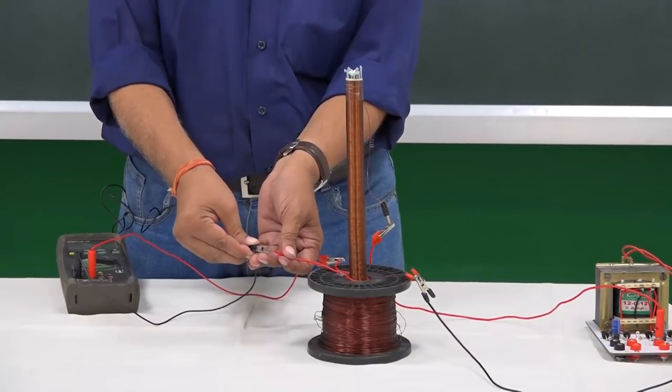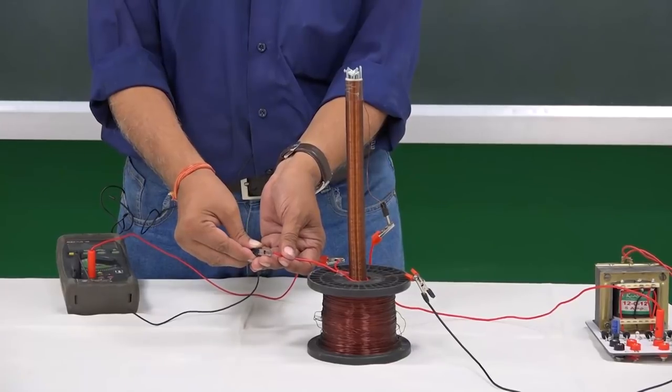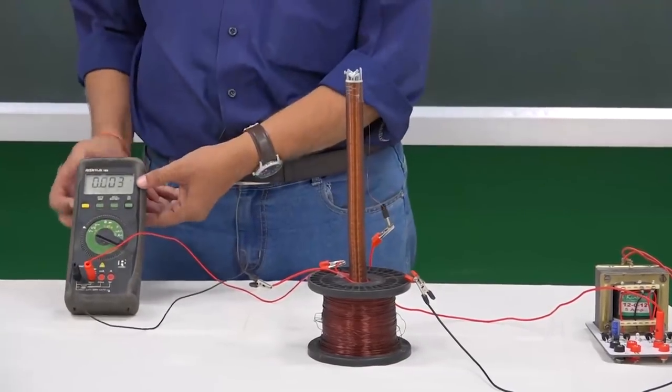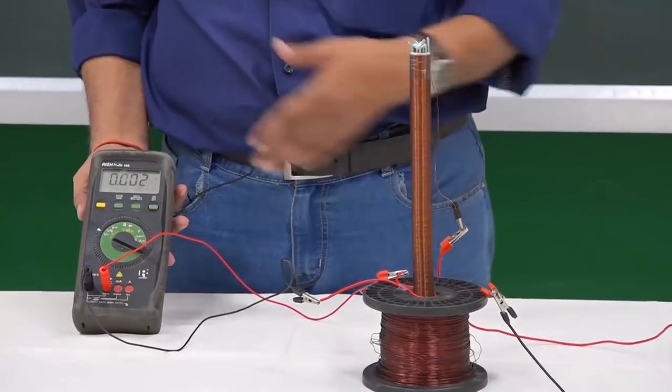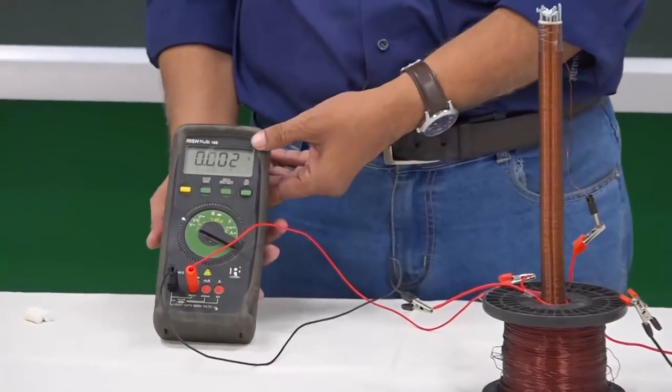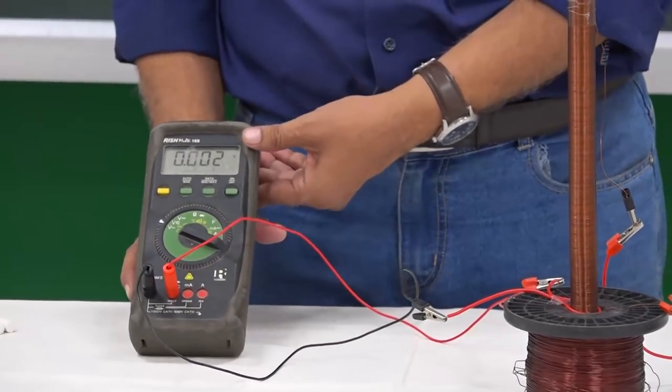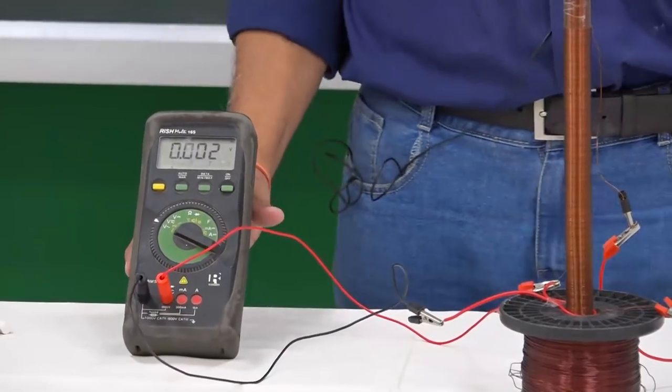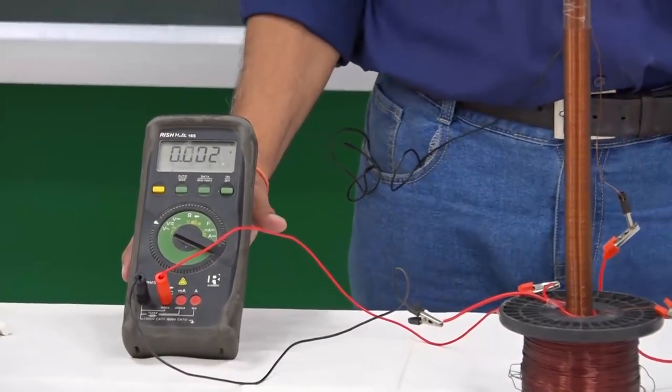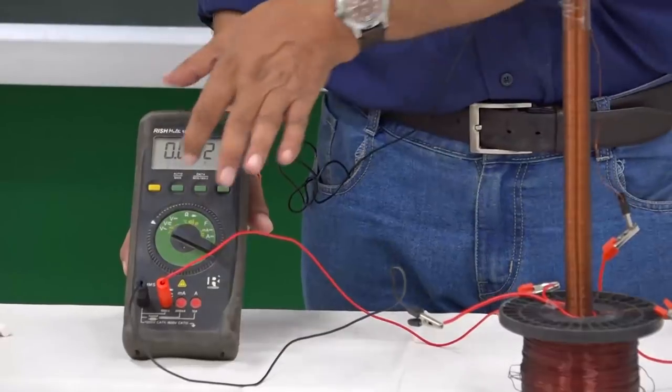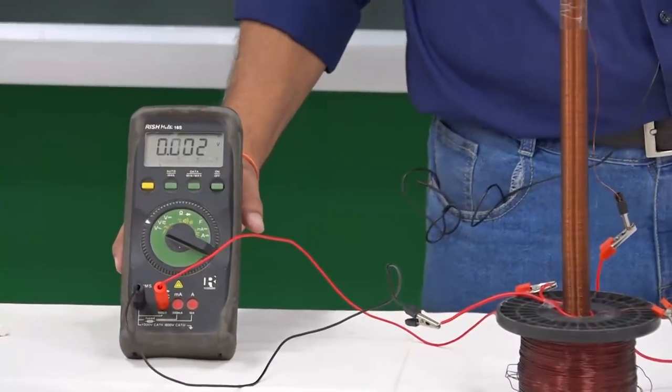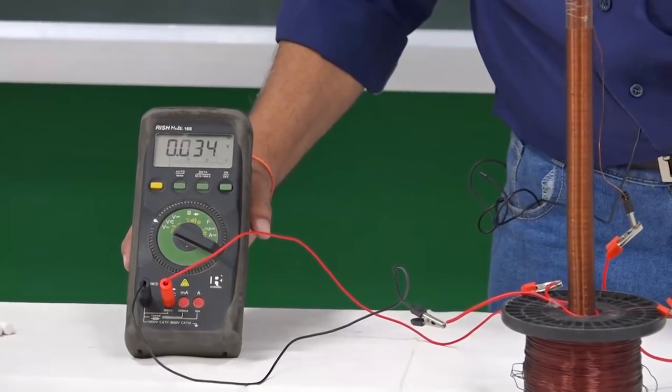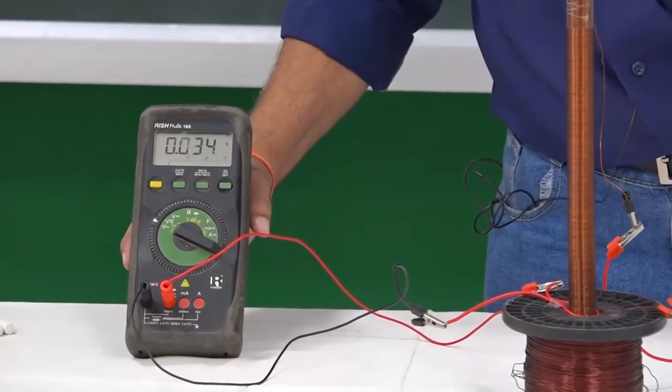The switch is not on and whatever you are seeing is just a zero error in the third place, 0.002, but that is almost zero. Now I am switching on the power and you look at this display. What does it read? It is 0.034.